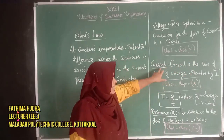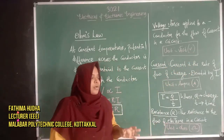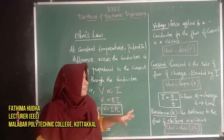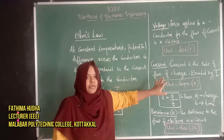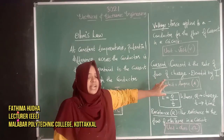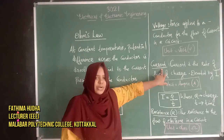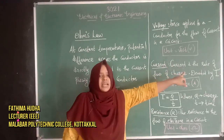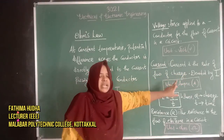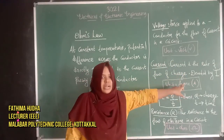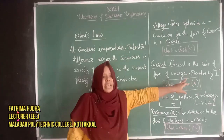The current means the rate of flow of charge in a circuit. The current is denoted by I. Its unit is the Ampere, represented as A.